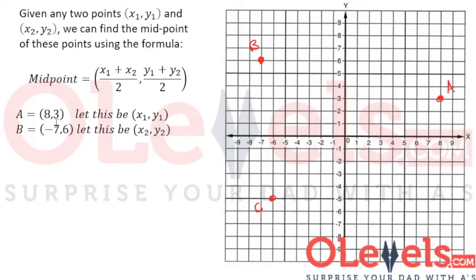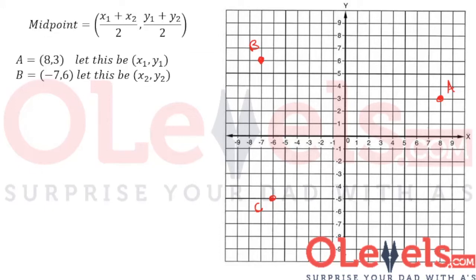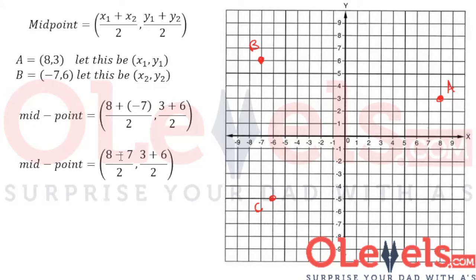All we do now is plug in the value of x1, y1 and x2, y2 in this formula. So let's do just that. x1 is 8 and x2 is -7. y1 is 3 and y2 is 6. So we get (8 + (-7))/2 and (3 + 6)/2. 8 plus minus 7, a plus and a minus make a minus, so this becomes (8 - 7)/2 and the rest remains the same.